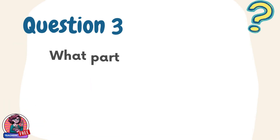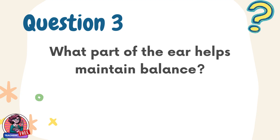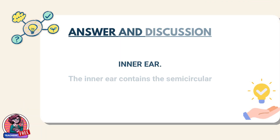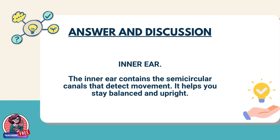Question 3. What part of the ear helps maintain balance? Answer: Inner ear. The inner ear contains the semicircular canals that detect movement. It helps you stay balanced and upright.